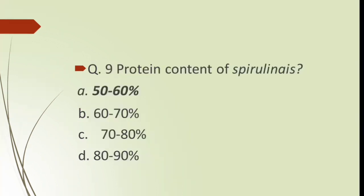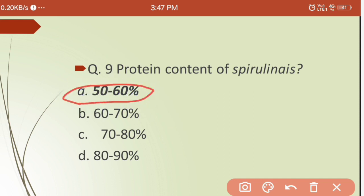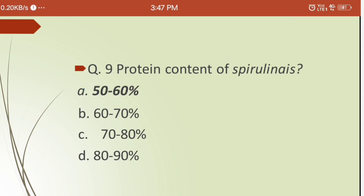Ninth question: what is the protein content of Spirulina? Options are: (a) 50–60%, (b) 60–70%, (c) 70–80%, (d) 80–90%. The answer is option (a) — but note Spirulina protein is actually 60–90%. Spirulina is also called the food of the future because of its high protein content.